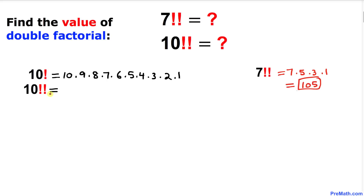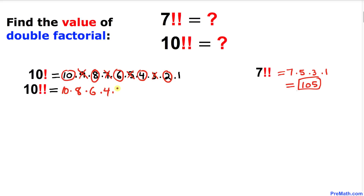Let's take care of the double factorial of 10. We're going to do exactly the same way as in the previous example. We start off with 10, then skip 9, times 8, skip 7, times 6, skip 5, times 4, skip 3, times 2, and skip 1. So we get 10 times 8 times 6 times 4 times 2.